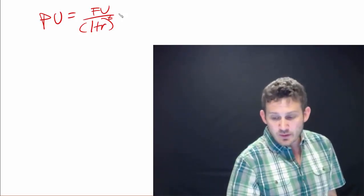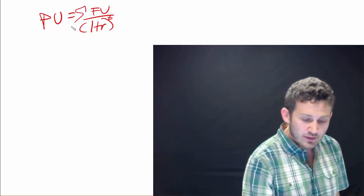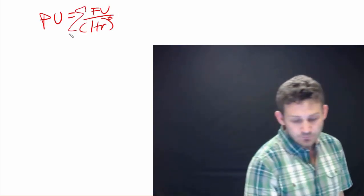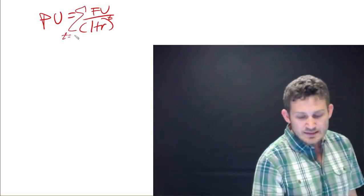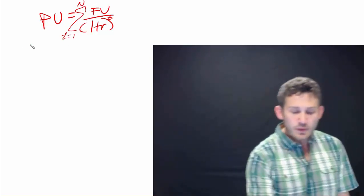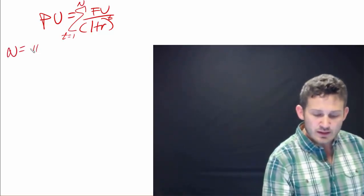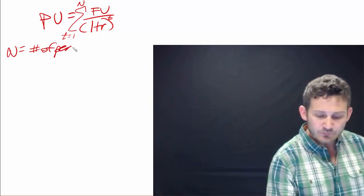Now the slight difference that we're going to do here is that we are going to add a Greek letter sigma here. And we are saying this is from T equals 1 until N, with N denoting the number of periods.